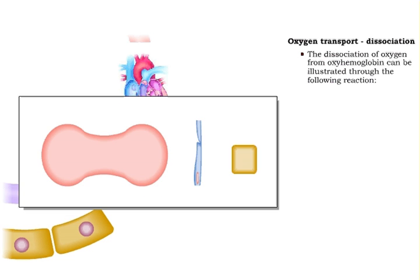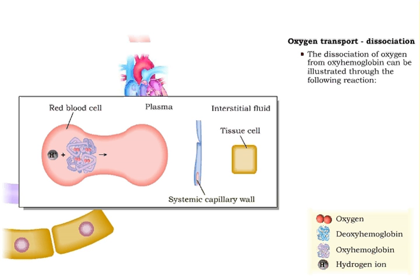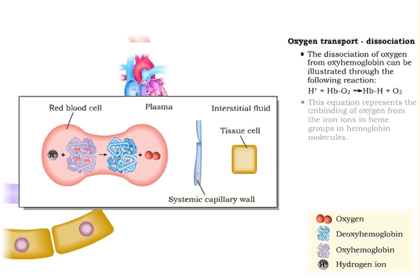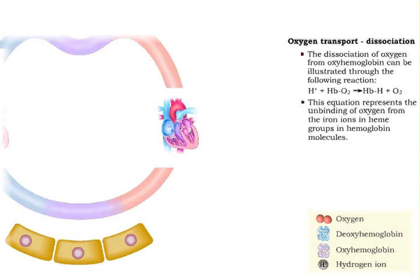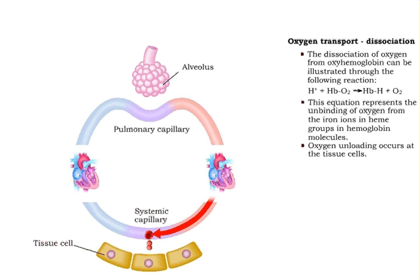The dissociation of oxygen from oxyhemoglobin can be illustrated through the following reaction: hydrogen ions bind to oxyhemoglobin to form deoxyhemoglobin and oxygen. This equation represents the unbinding of oxygen from the iron ions in heme groups in hemoglobin molecules. Oxygen dissociation occurs at the tissue cells.